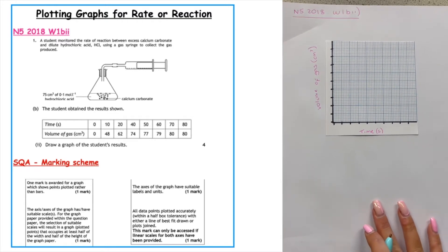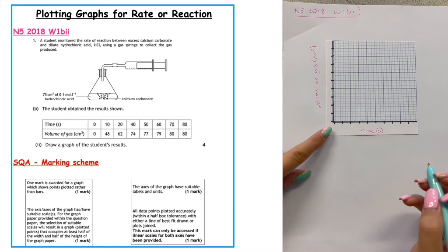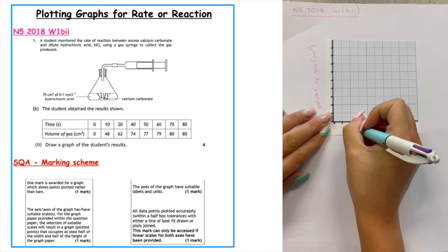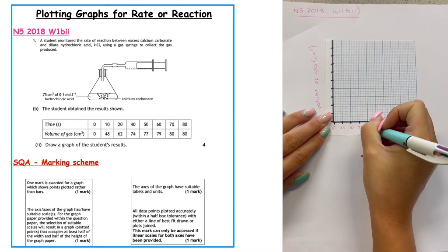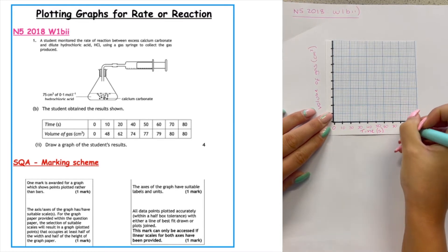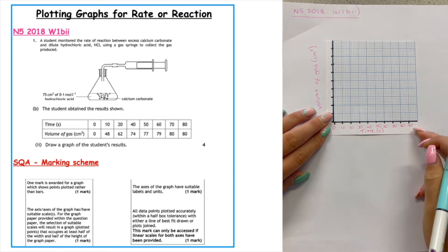Next we have to choose an appropriate scale. For the factor we're in control of, it's a nice easy scale to work with. We can see the time goes up in tens, so we start at zero and go 10, 20, 30, 40, 50, 60, 70, 80, and 90. It only goes up to 80 in the data, so we don't need to go beyond that.